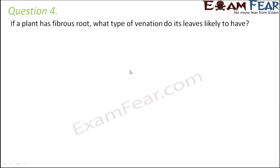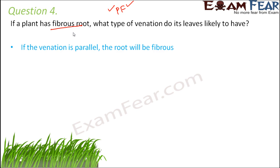Question number 4: if a plant has fibrous root, what type of venation do its leaves likely have? We have already learned that there is a relationship between root type and the type of venation on the leaves. If a plant has parallel venation it will have fibrous root — so if the plant has fibrous root, the venation would be parallel venation.